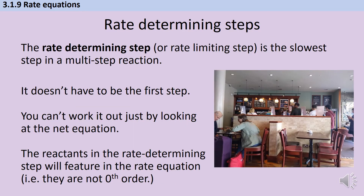The rate determining step — also called the RDS, or sometimes the rate limiting step on other exam boards — is the slowest step in a multi-step reaction. It doesn't have to be the first step and it doesn't have to be the last step. You can't tell just by looking at the overall symbol equation what the rate determining step is going to be; you need a little bit more information.